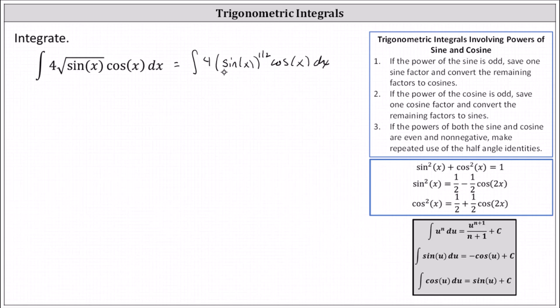But we can let u equal sine x. If u equals sine x, notice du equals the derivative of sine x times dx, which is cosine x dx.